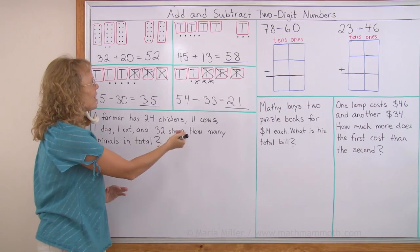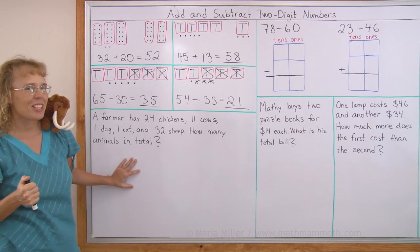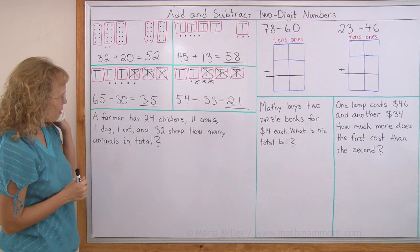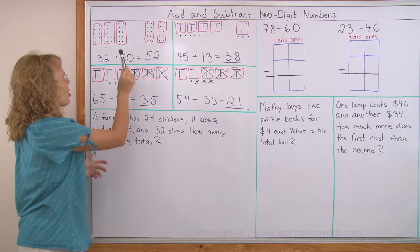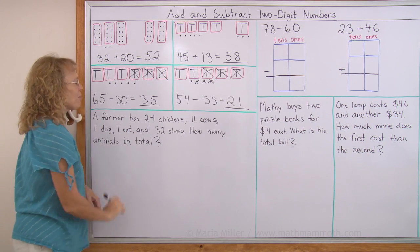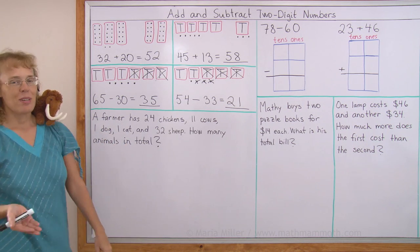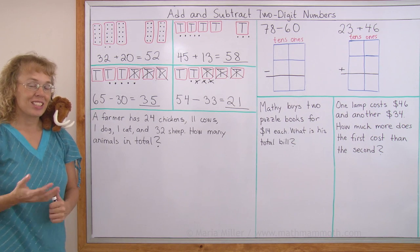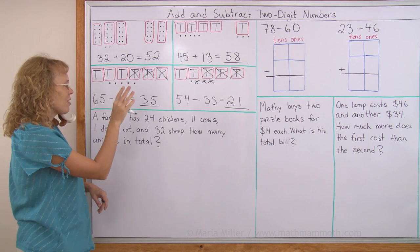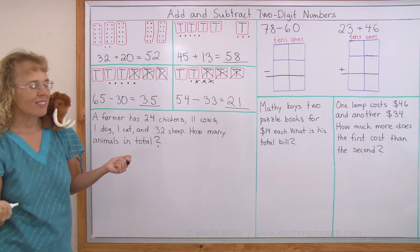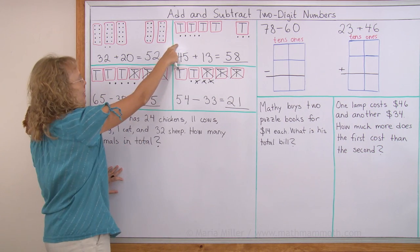We're going to use this idea of using a model here to solve this word problem that can look a little difficult. Thank you, Matthew, for writing this word problem. It's a little challenging, but don't be afraid. I'm going to use a model to solve it. A farmer has 24 chickens, 11 cows, one dog, one cat, and 32 sheep. How many animals in total does this farmer have? What we're going to do is we're going to take these numbers and model them like that.